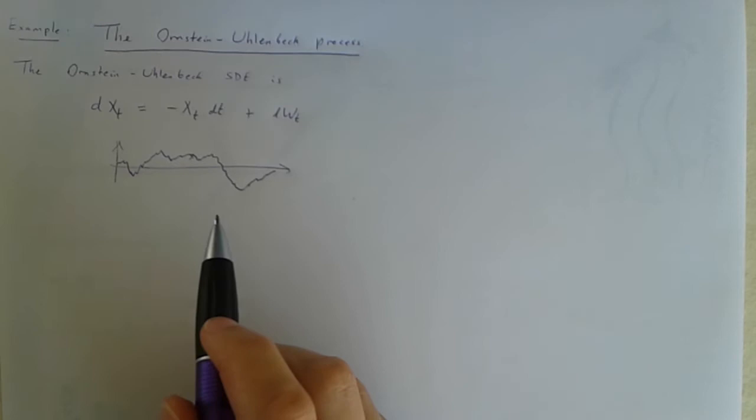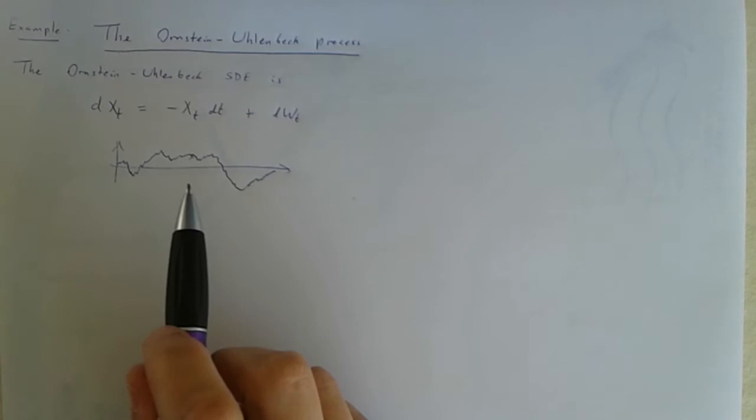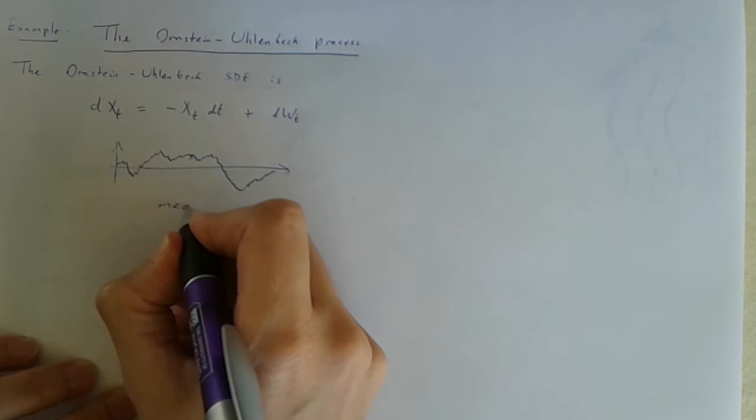So the local variance of their little changes is about the same. But the key difference is that where the Brownian motion has zero drift so it's not going anywhere in particular, the Ornstein-Uhlenbeck process is always drifting back towards zero. It is a mean reverting process.